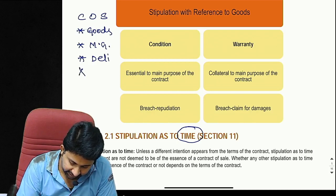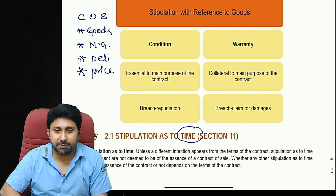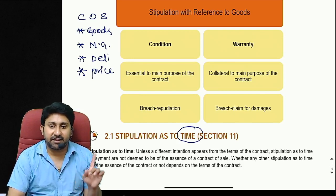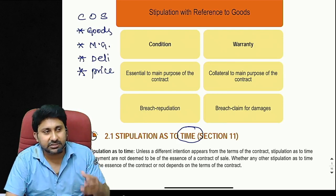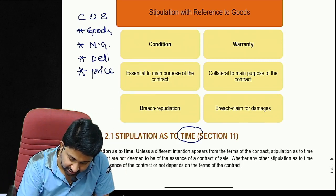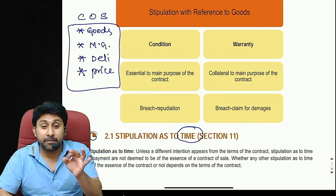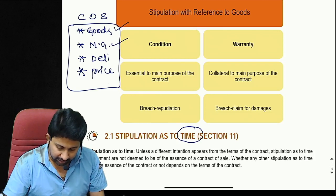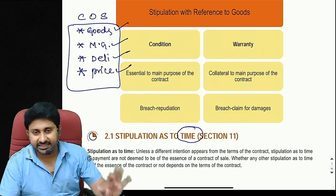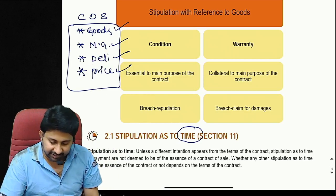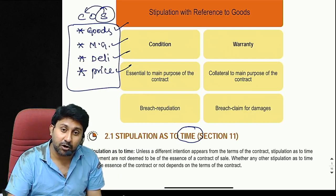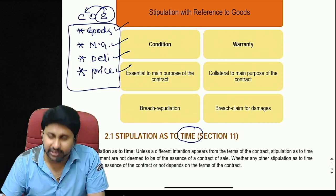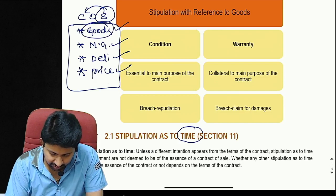The sale of goods must be made for a price. That price may be a normal price or one ascertained by a valuer — it can be fixed by the parties or by a third party. When all these essentials are present, and the transaction satisfies the Contract Act, it is called a contract of sale.